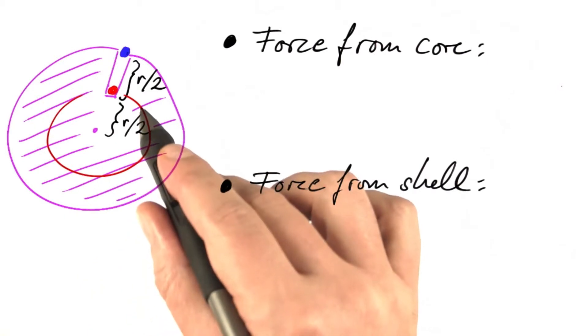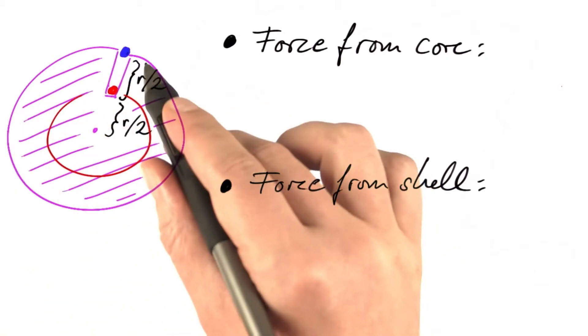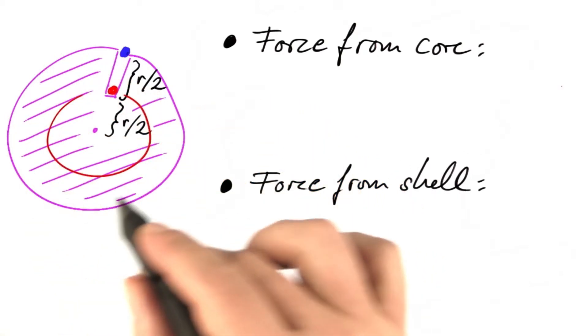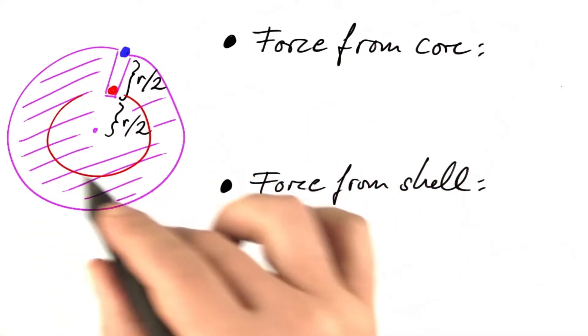The core part is again a sphere, as is the complete object. So we can compare what's going to happen as we go from the large sphere to the small sphere.